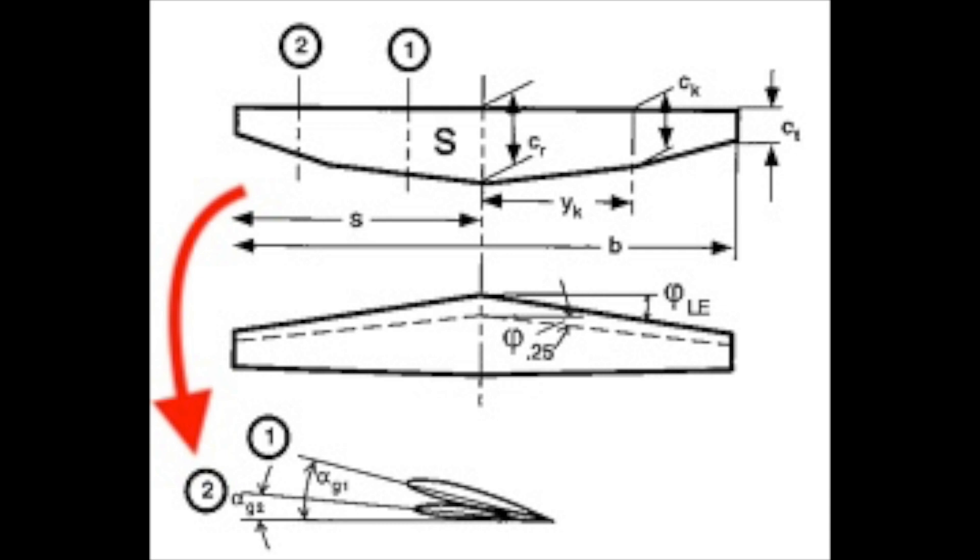Sometimes you'll see stall strips on wing leading edges to induce a stall closer to the wing root for the same reason. The simple design of the RV-12 wing doesn't require any of this.